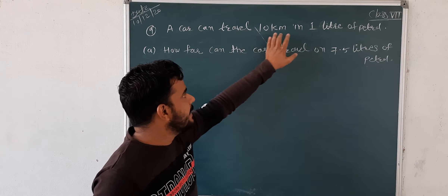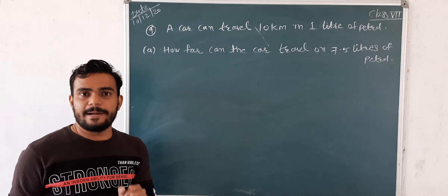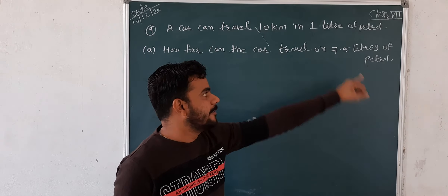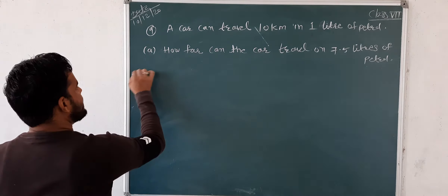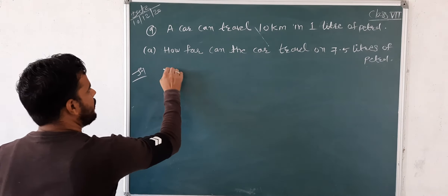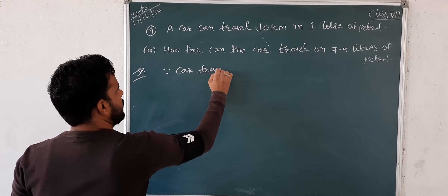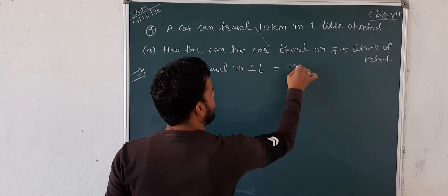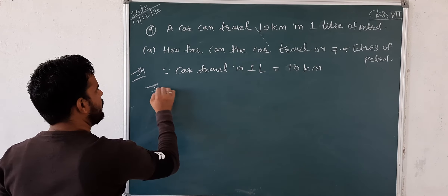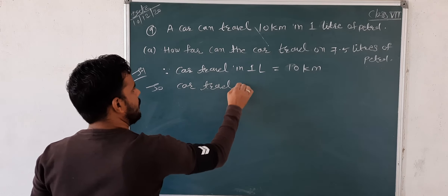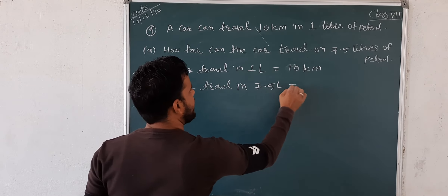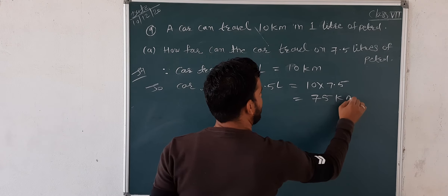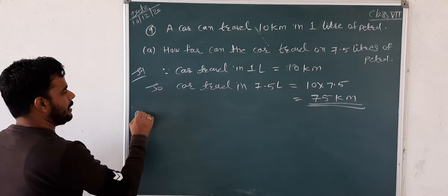A car can travel 10 kilometers in one litre of petrol. So in 7.5 litres petrol: 10 multiplied by 7.5, so the answer is 75 kilometers. This is your answer.